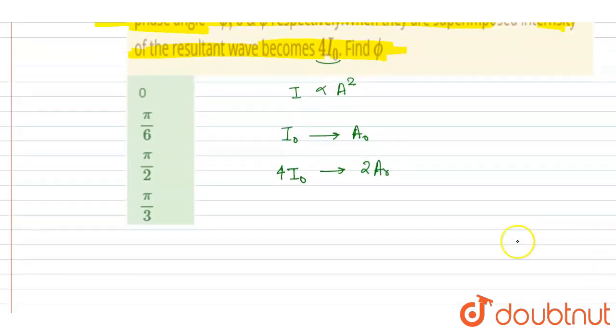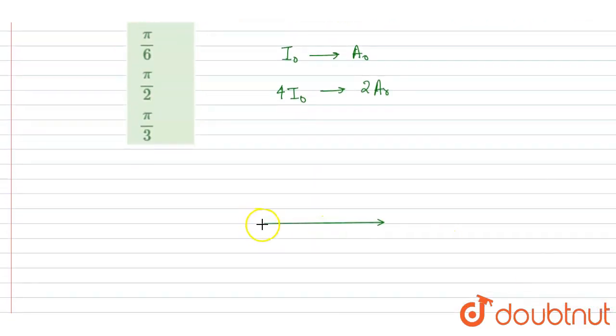If I draw the phasor diagram, so one of them is having zero phase, another one is having the same amplitude, right? Intensity is same, then amplitude will also be same. Plus φ, minus φ.